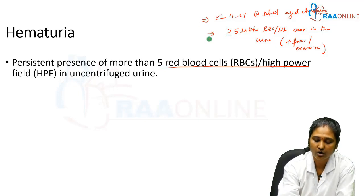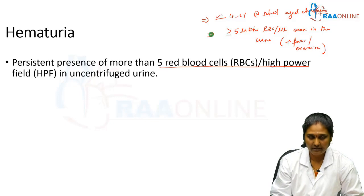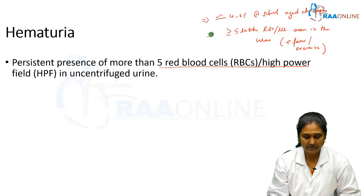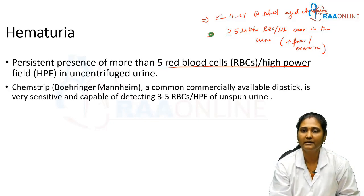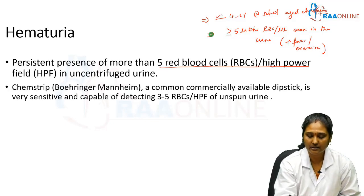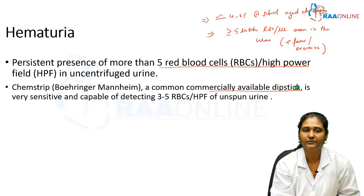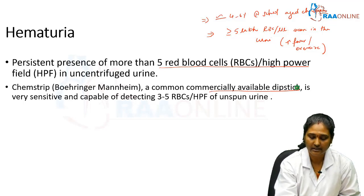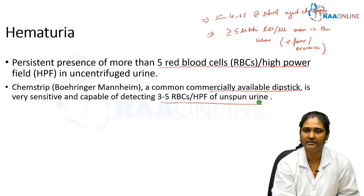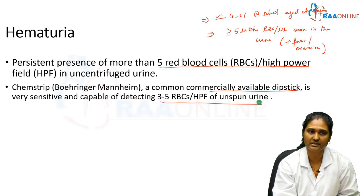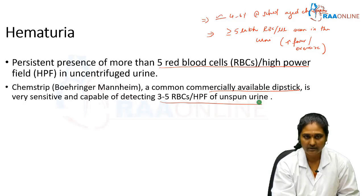This RBC count can increase when the child has fever, or it may be precipitated following exercise — these are all normal phenomena. Hematuria is commonly detected by the commercially available dipstick, which is very sensitive and capable of detecting even 3 to 5 RBCs per high power field in an uncentrifuged urine sample, also called the chem strip or the Boehringer Mannheim strip.